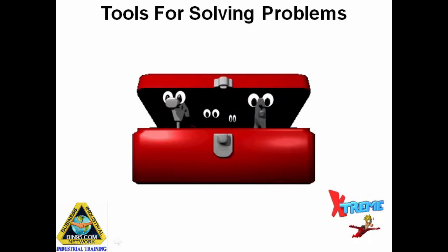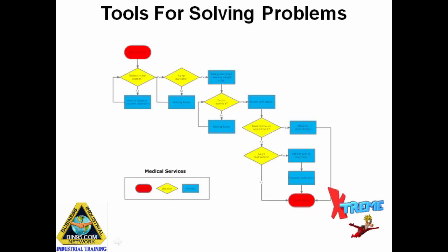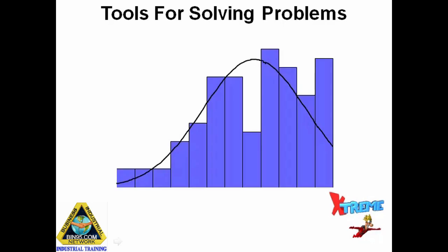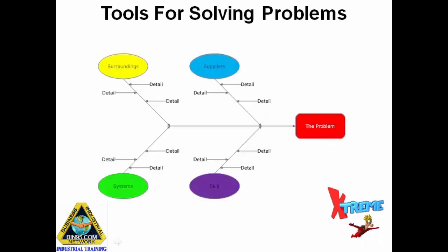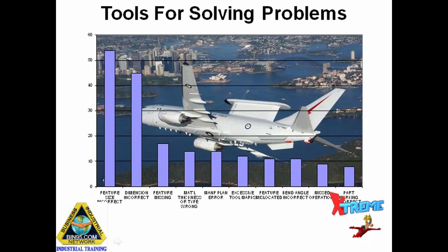There are seven basic tools that are used in quality, and they are flowcharts, scatter diagrams, control charts, histograms, cause and effect diagrams, check sheets, and of course the Pareto diagram, which is our topic of discussion today.